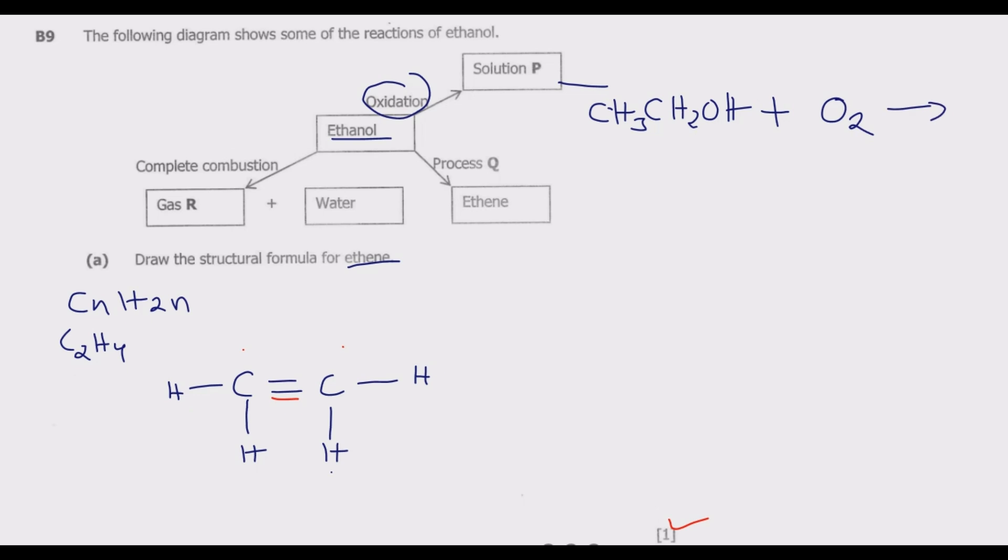We react ethanol with oxygen. The products will be ethanoic acid plus water. What happens is one oxygen replaces one part of the molecule, so this oxygen goes there. The two hydrogens combine with the remaining oxygen to give us water.